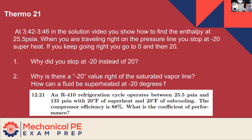Every time we go through the evaporator — boiling — every time we go through the condenser — condensing. We just keep changing the phase of this substance as it goes around the cycle, and we're able to transfer impressive amounts of energy in and out of it. And voilà, we have refrigeration cycles and heat pumps.